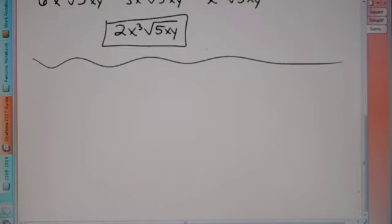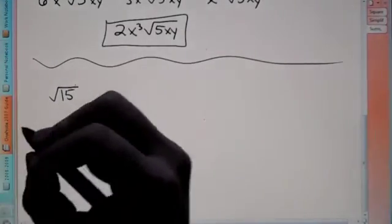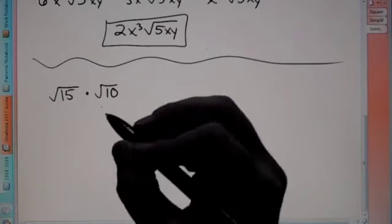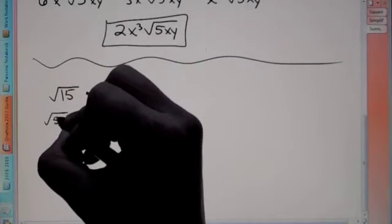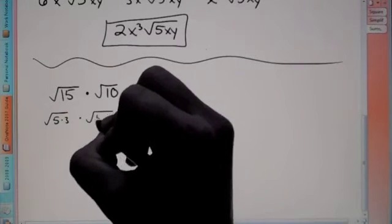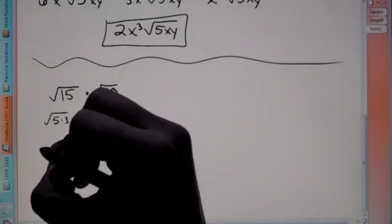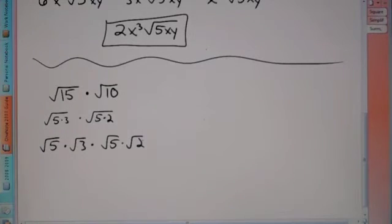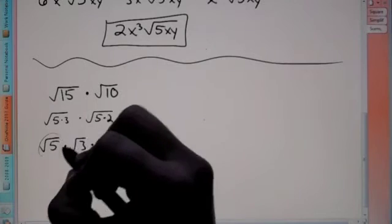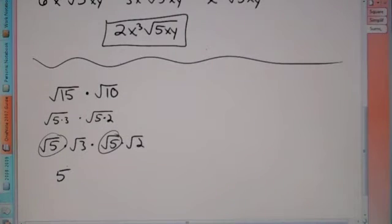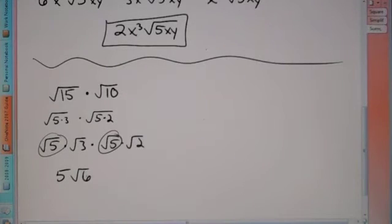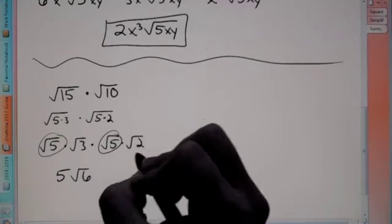For our next example we have root 15 times root 10. We just added and subtracted roots — now we're going to multiply. There are a couple of ways to handle this. The first way is to break these down into factors as much as possible. Break down 15 to be 5 times 3, and break down 10 to be 5 times 2. You can write a root over each one: root 5 times root 3 times root 5 times root 2. Look for pairs — pairs cancel out the roots. Root 5 times root 5 is 5, and we're left with root 3 times root 2, which is root 6. So we just have 5 root 6.